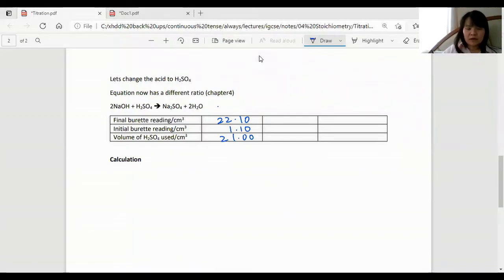Now let's see what the calculation will look like if we change to H2SO4. We see that H2SO4 here, it's not 1 is to 1 with the alkali. It's 2 is to 1 here, the ratio. So the molar ratio is not 1 to 1 this time.